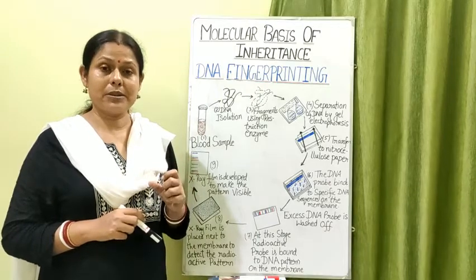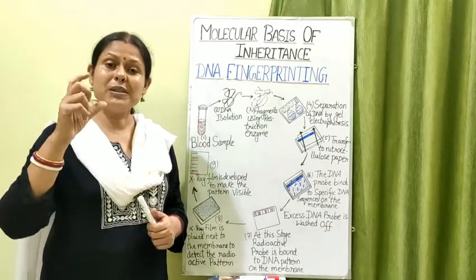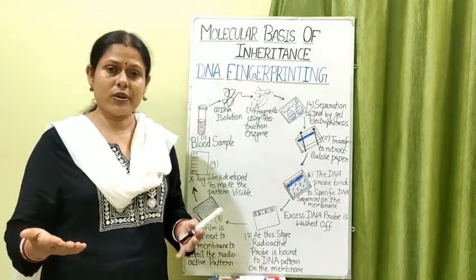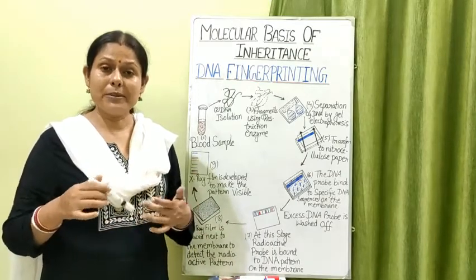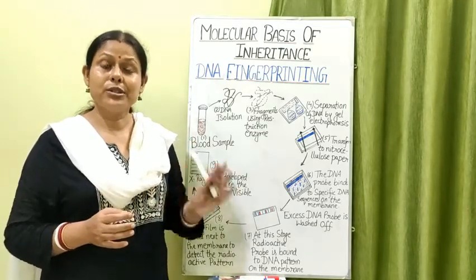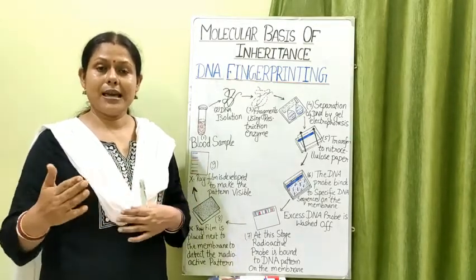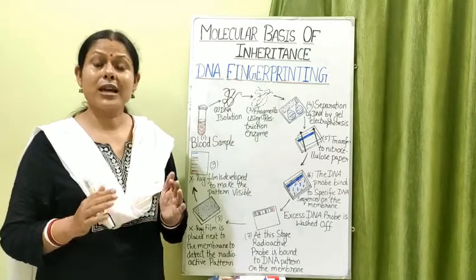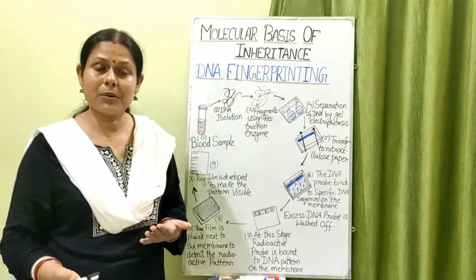VNTRs — Variable Number of Tandem Repeats — are repetitive DNA nucleotide sequences in the non-coding regions that do not code for any protein. Corresponding complementary sequences to these repetitive regions, such as TTTTT, AAA, GGG, CCC, are produced in the laboratory and labeled with radioactive isotopes to create radioactive DNA probes.